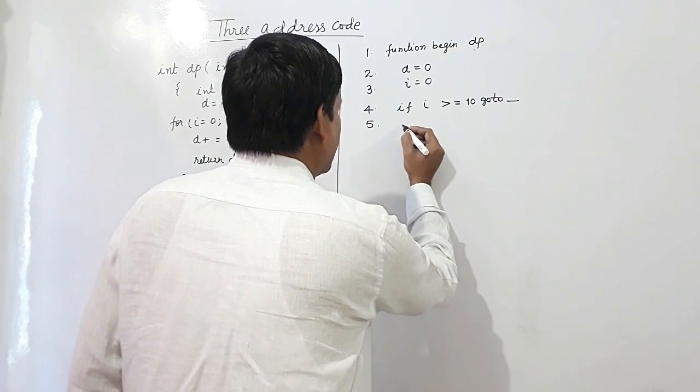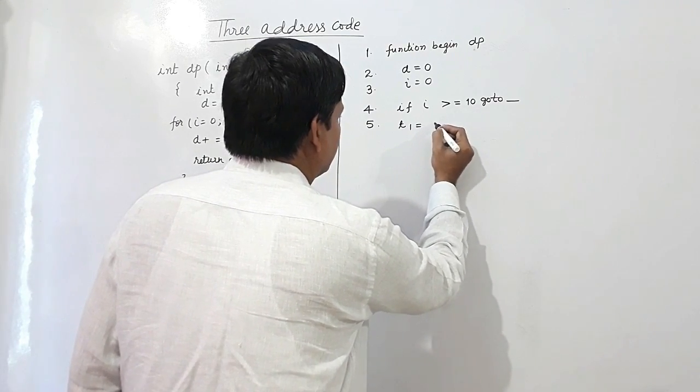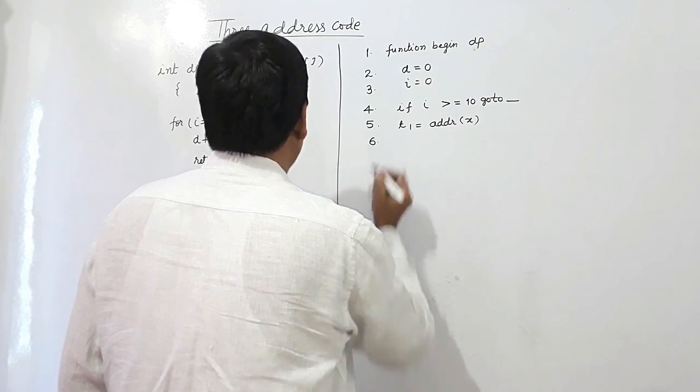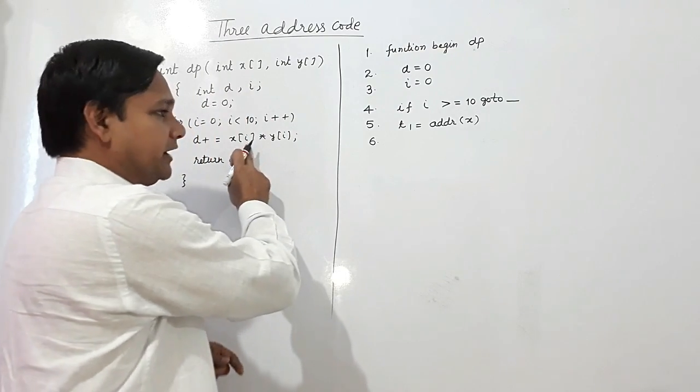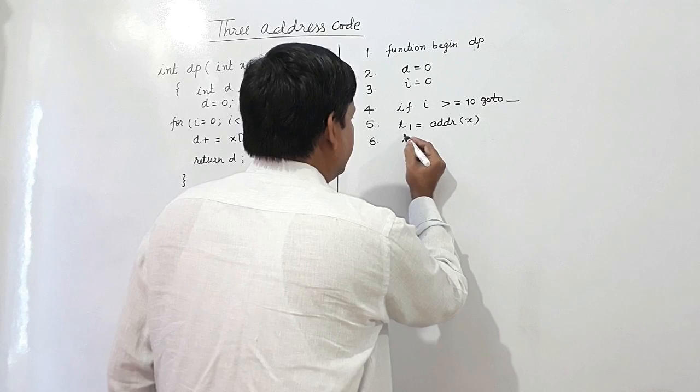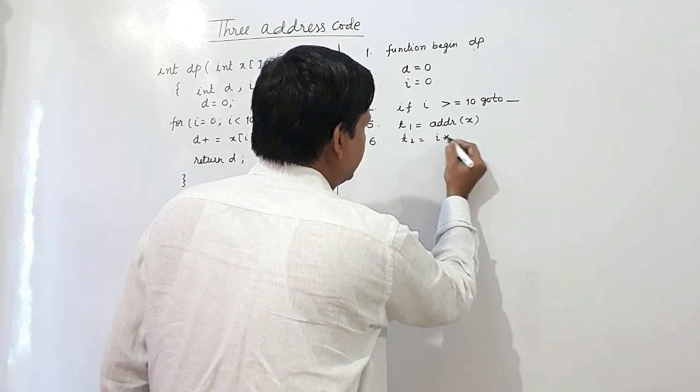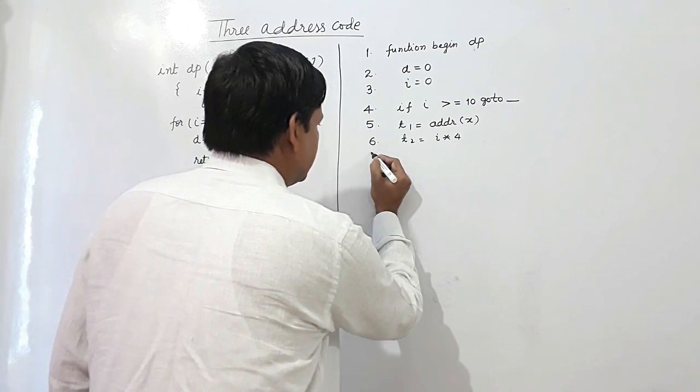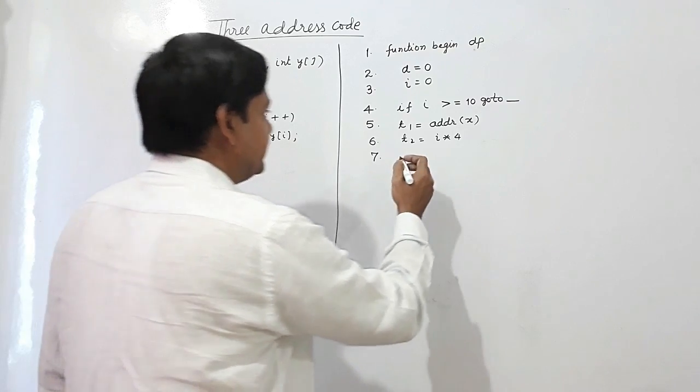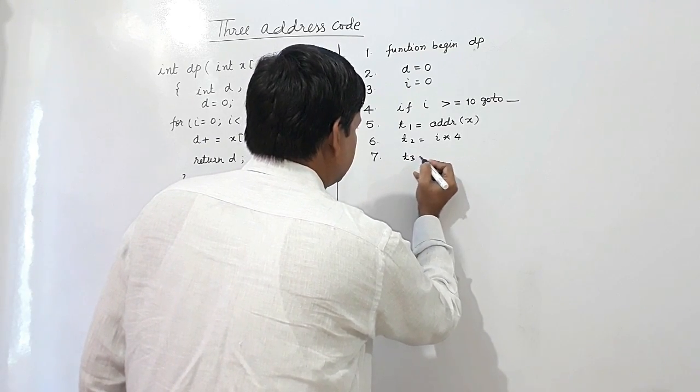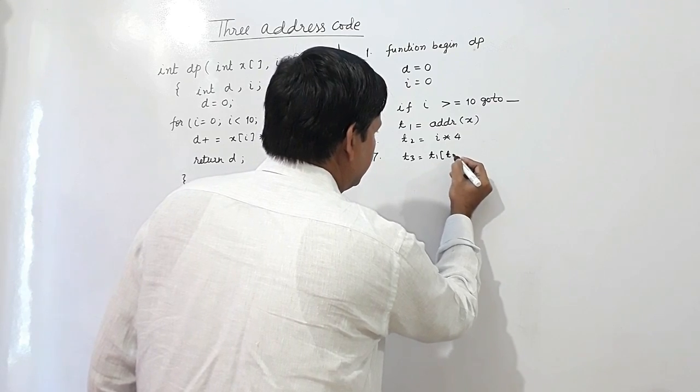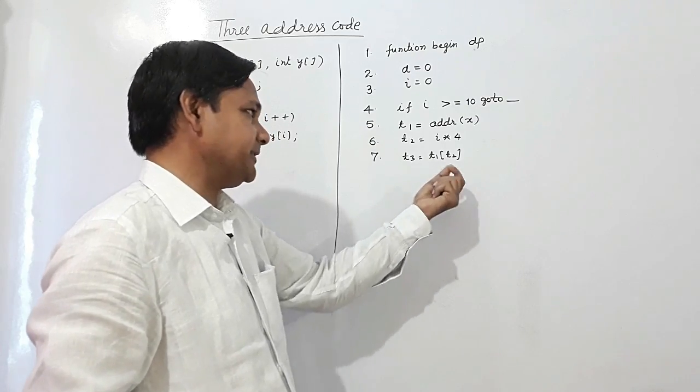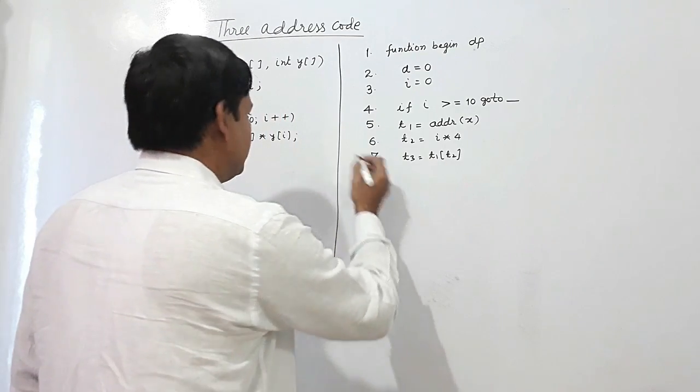For x[i], what will happen here? t1 equals address of x. Now this i is of type integer, so t2 will be equal to i into 4, size of int is 4. Now this x[i] can be written as t1 plus t2. We are adding t2 in this address of t1 and we are accessing that address t3. And for y[i]...